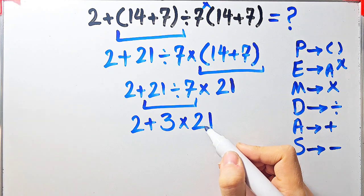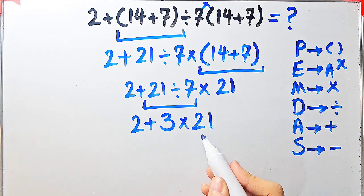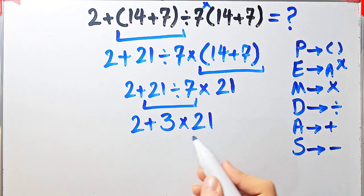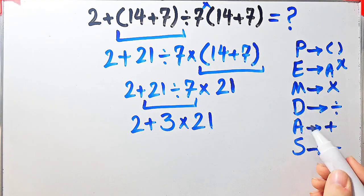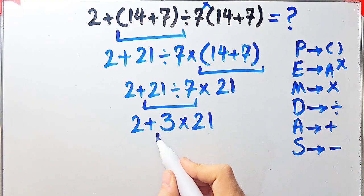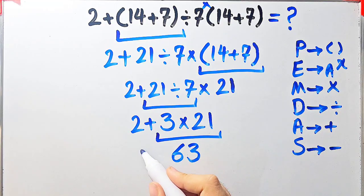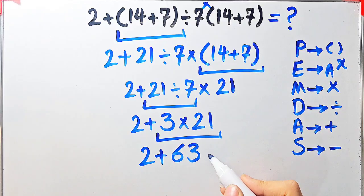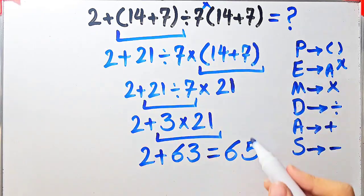Now we have addition and multiplication. We simplify the multiplication first because it has higher priority than addition: 3 times 21 equals 63. Now the question is 2 plus 63. 2 plus 63 equals 65. The final answer of this question equals 65.